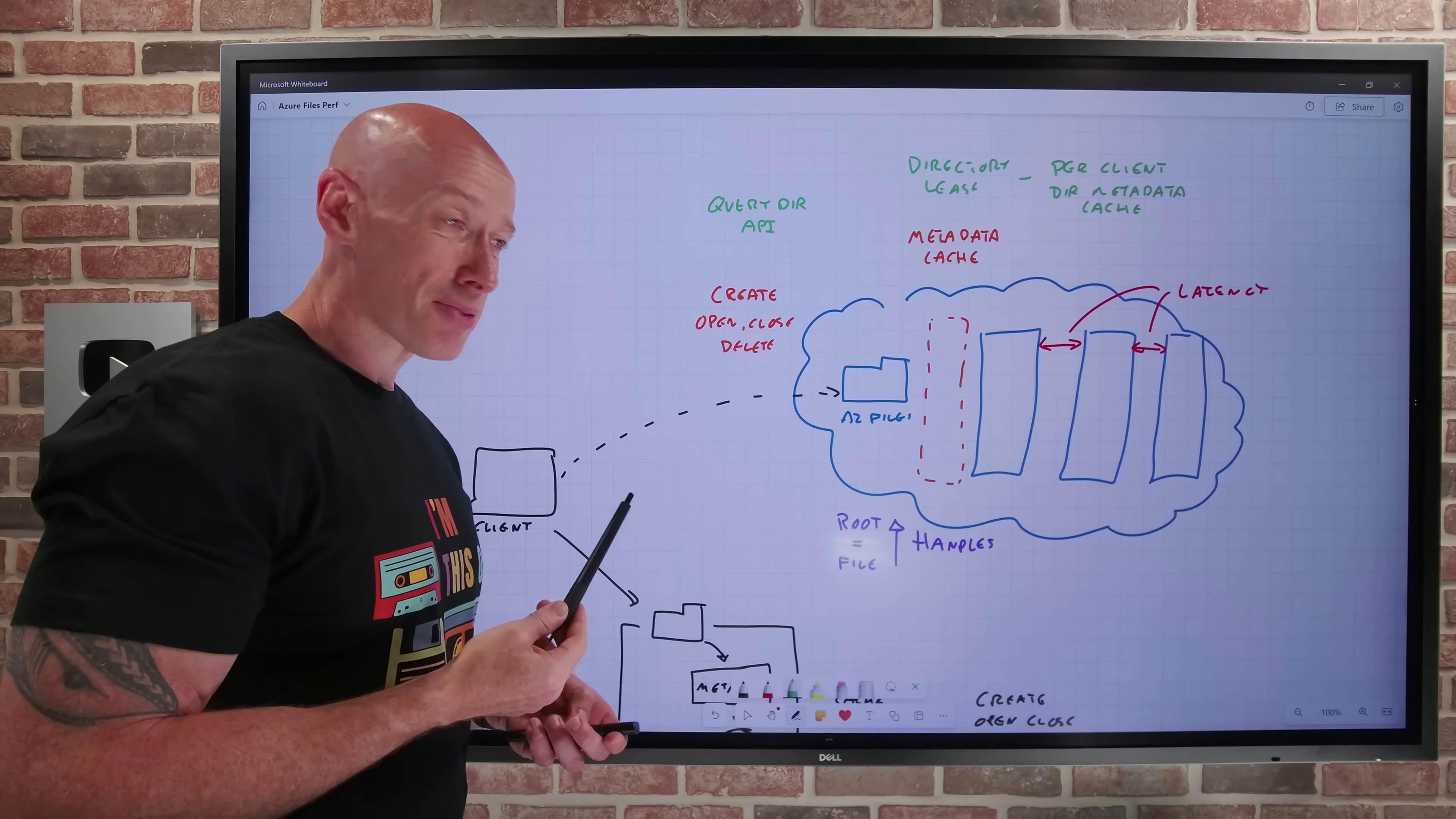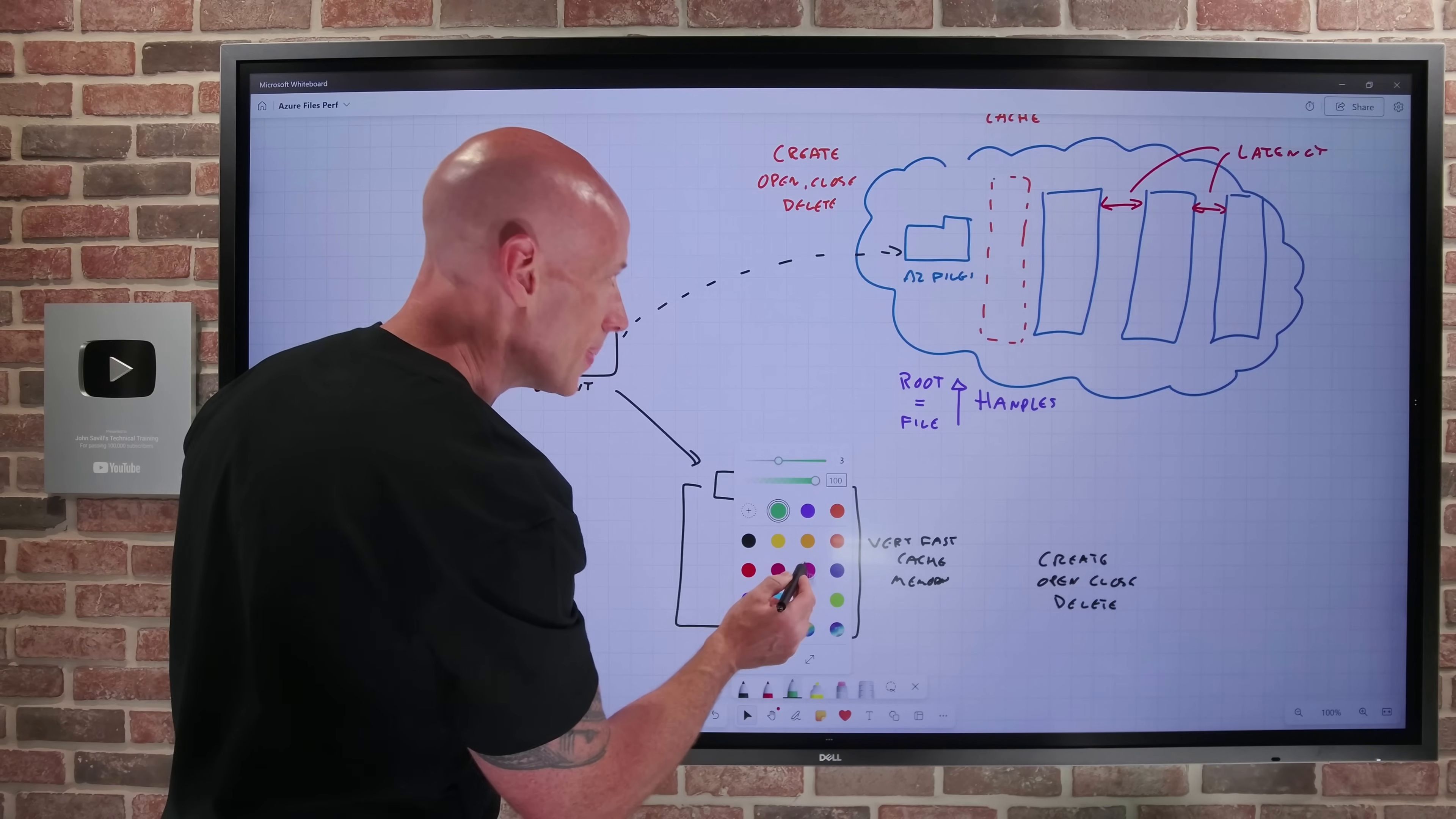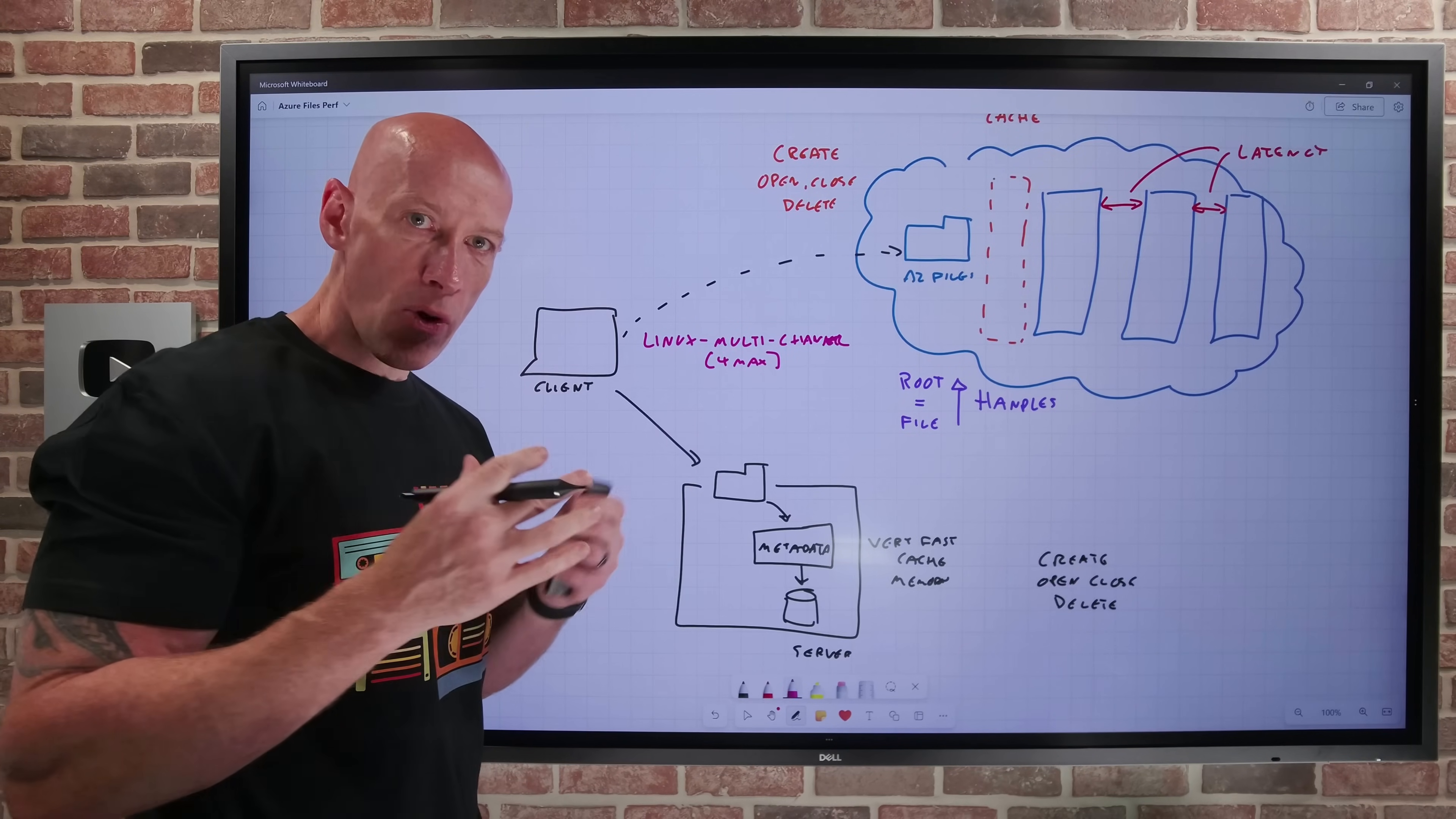And there's one more change. Something else we see on clients, and it's been a Windows client talking to SMB, is multi-channel. It lets me establish multiple channels to the file share, and then I get the combined performance of them. So now what's available is that same ability, but now for Linux as well, I have multi-channel. And today it's four max. So I can combine up to four channels to a single connection. So it's going to multiply that network bandwidth.